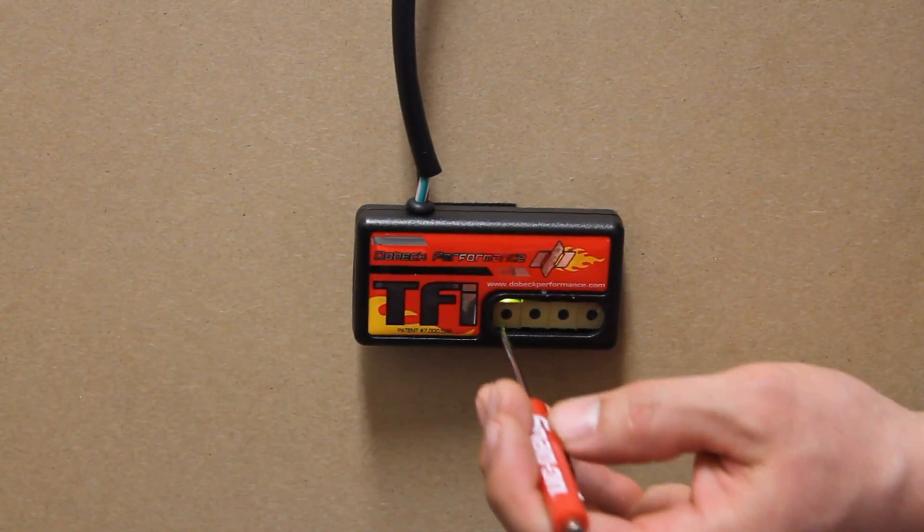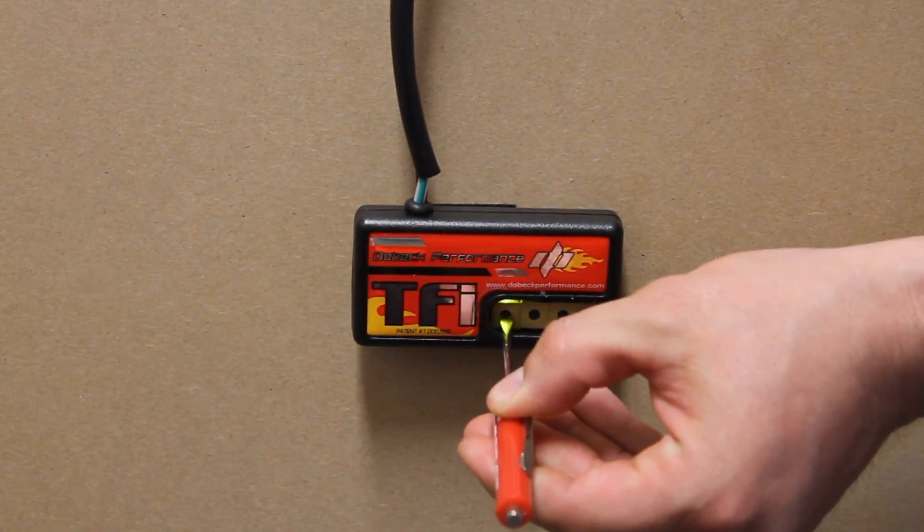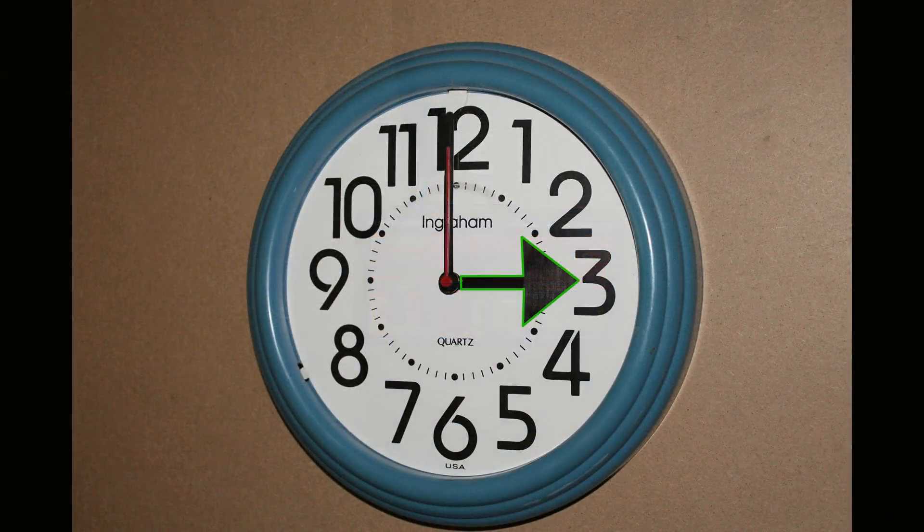Let's say I want to set my idle and cruise to three. Turn the screw so the arrow is pointing to three o'clock.